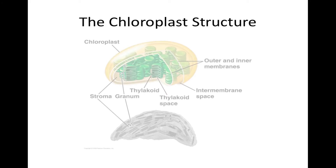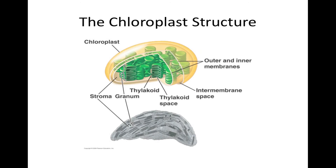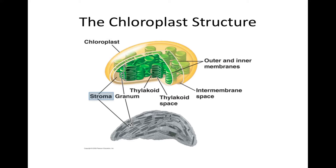The chloroplast structure: the chloroplast has an outer and inner membrane to house the stroma, a liquid environment found inside all chloroplasts. Inside the chloroplasts are thylakoids, and a stack of thylakoids is called a granum.